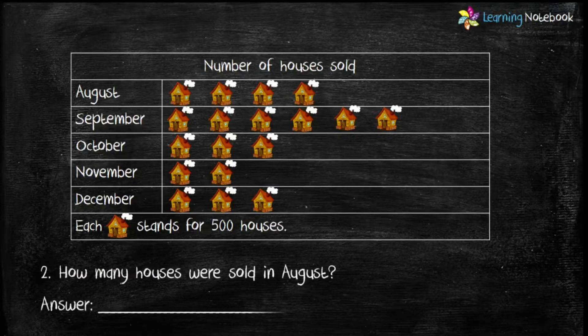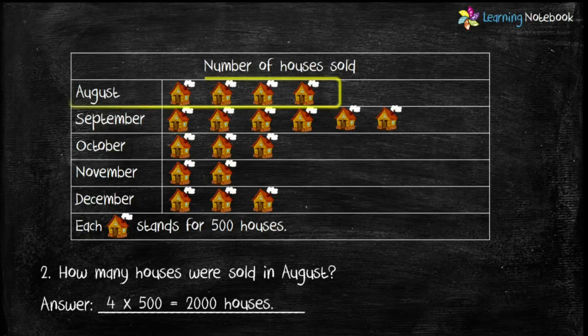Next question: how many houses were sold in August? To calculate the number of houses sold, we count the pictures and multiply by 500. In the month of August, the number of pictures is 4, so 4 × 500 = 2000 houses.